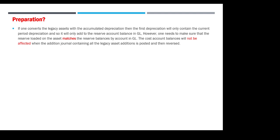You need to make sure that the reserve loaded on the assets matches the reserve balance by account in GL. When you upload the opening balance, for example if you have four or five modules in Oracle Cloud, the main module is GL. You upload a trial balance as the opening balance. Some accounts in the trial balance are related to assets — for example the reserve account. Whatever you upload in assets, the total reserve amount must match the same account in GL as the trial balance. Once you upload in Oracle Fixed Assets, run reports, create accounting, and transfer — you make a reconciliation.